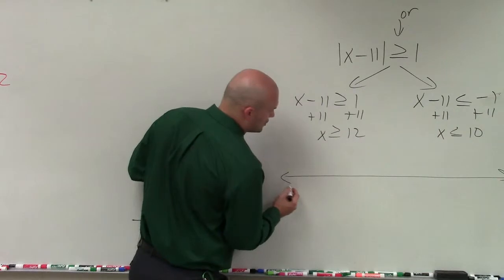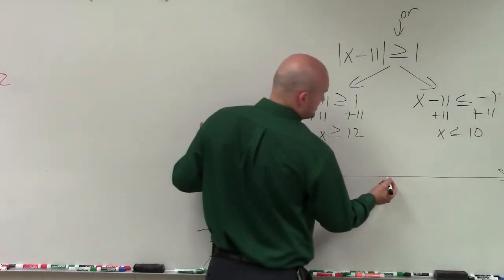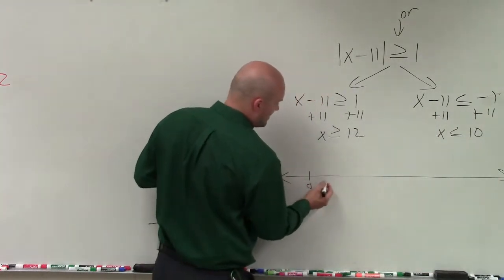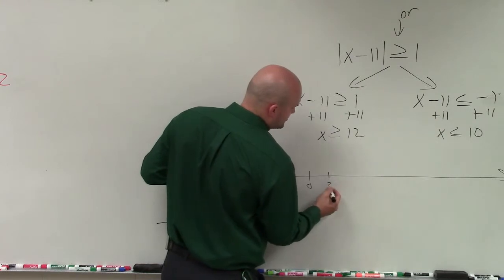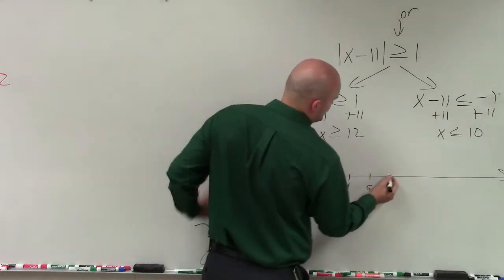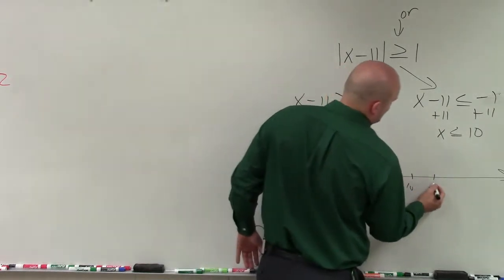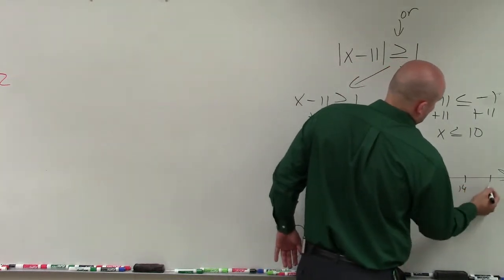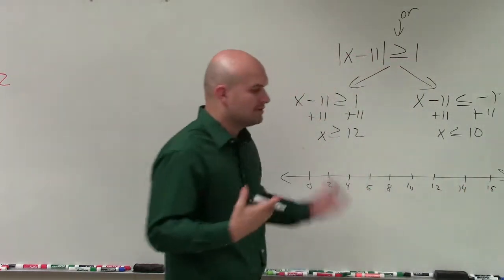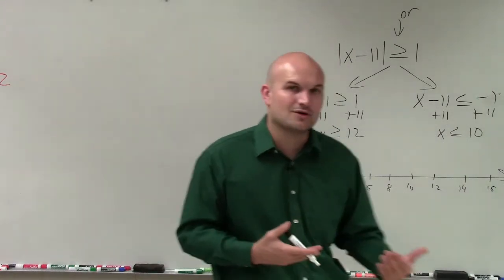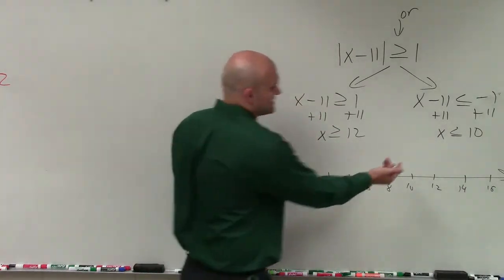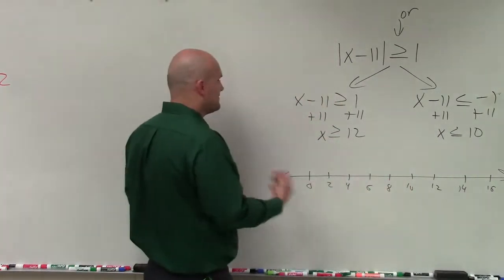And when I graph this, I want to make sure I include both my values. So let's start 0 over here, and then I just have, let's go by 2's: 2, 4, 6, 8, 10, 12, 14, 16. All right? If you're creating your own line graph, you don't have to have 0 in the center. You can create your graph however you like.